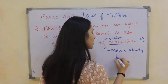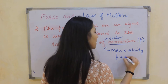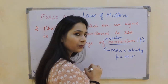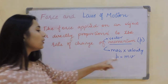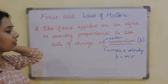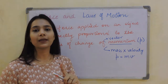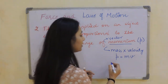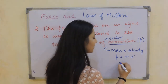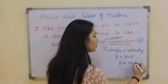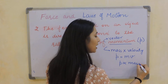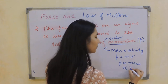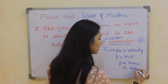The direction of momentum is the same as that of the direction of velocity. So I can write this as p = mv. This means that momentum is directly proportional to the mass, and momentum is directly proportional to the velocity.